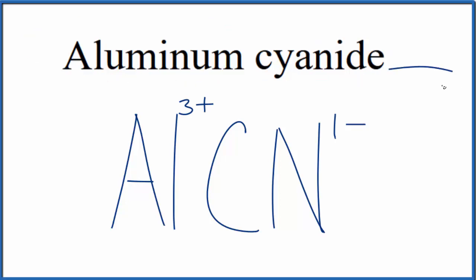it doesn't say ion after it, these charges need to add up to 0. We need a net charge of 0. If we had 3 of these cyanide ions, 3 times 1 minus, that would balance out the 3+. But we need to put parentheses around the cyanide ion, since we have 3 of them.